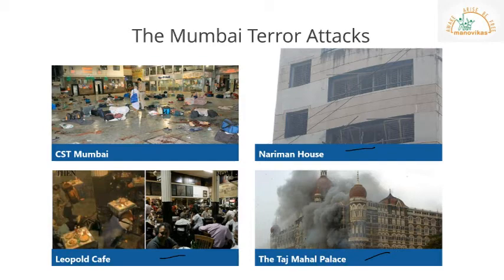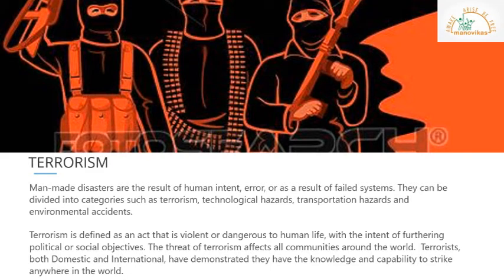By the early morning of 28th November, all sites except the Taj Hotel had been secured by the Mumbai Police and security forces. On 29th November, India's National Security Guards conducted Operation Black Tornado to flush out the remaining attackers at the Taj Hotel, ending the attacks. It lasted four days — a very long four days for those involved. When we talk about terrorism, what does it mean?